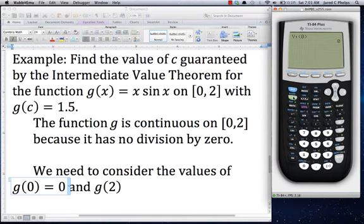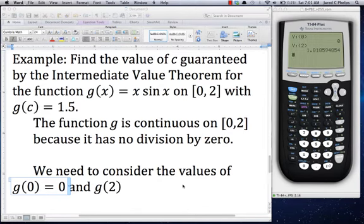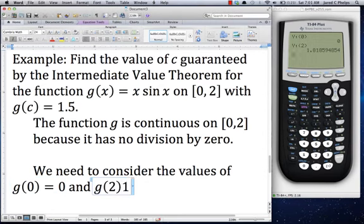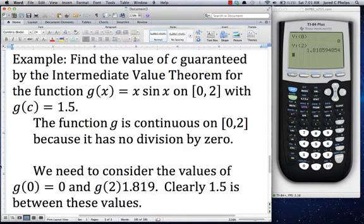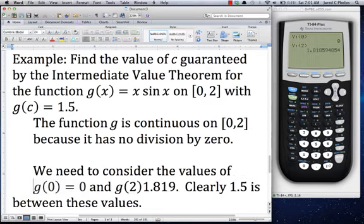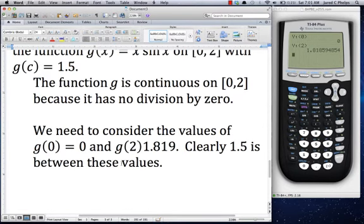Now to plug in 2, I'm going to do the same thing. Alpha trace or alpha F4, pick y1, this time plug in 2. What I get back is 1.819. In this case, we can see that clearly 1.5 is between these values. What does that mean? That means the intermediate value theorem does apply. Therefore, the IVT does apply.